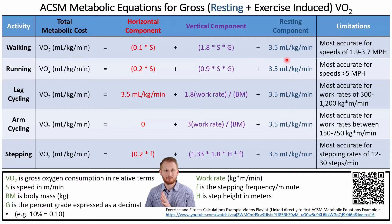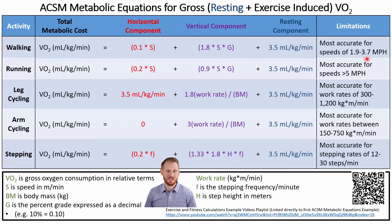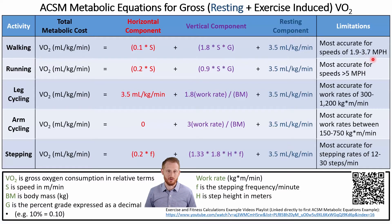Each of these equations has some limitations — if you violate these, they become less accurate. For the walking equation, the original research used speeds between 1.9 and 3.7 miles per hour. If you go below or above that range, the equation is going to be less accurate.